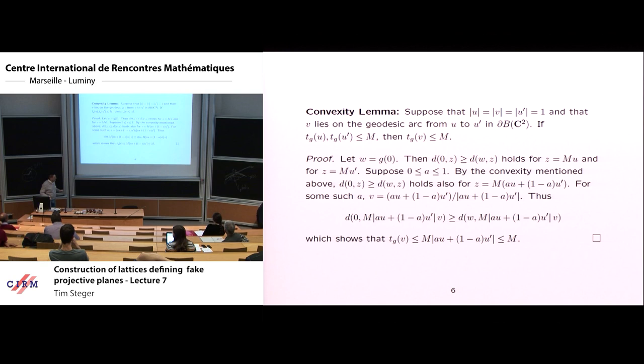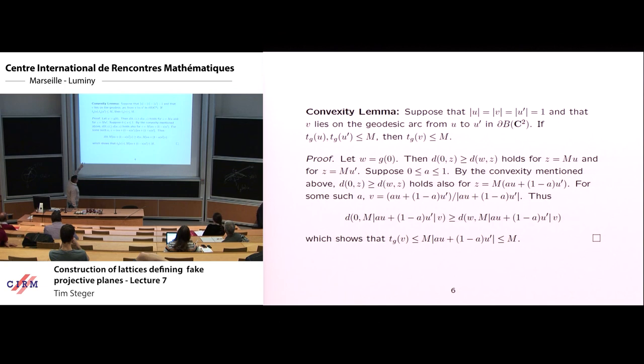So that shows we can actually compute T(U). This is U; this is where we're leaving the set; and this point here is T(U)·U, with the origin there. Supposing that we have three points lying on the boundary of the ball, and V lies on the arc between U and U′.